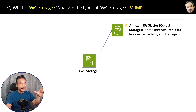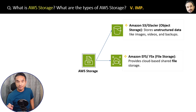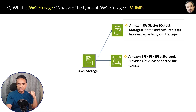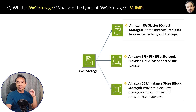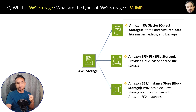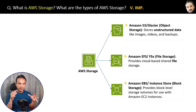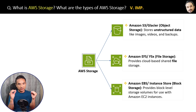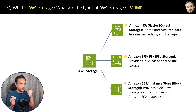The second type of storage is Amazon EFS — Elastic File System — which provides cloud-based shared file storage. The third type is Amazon EBS — Elastic Block Storage — which provides block-level storage. I am just giving one-line answers right now, but don't worry — in the upcoming questions I will explain each of these AWS storage types in detail with real examples, including when to use which one, because that is exactly what interviewers ask.